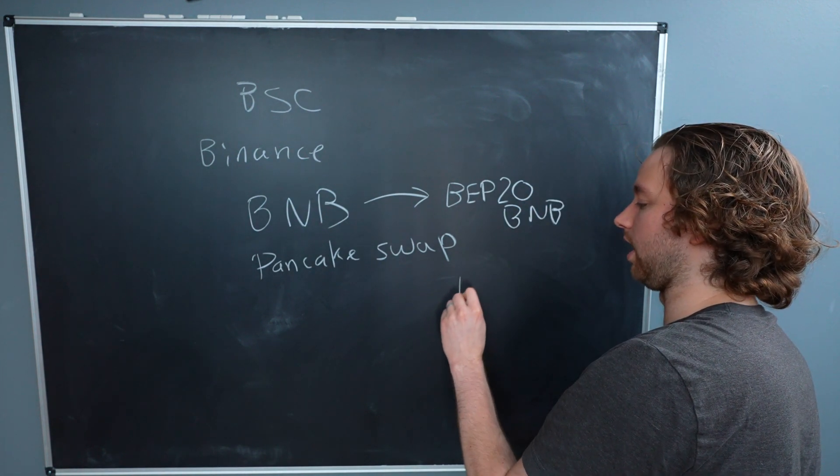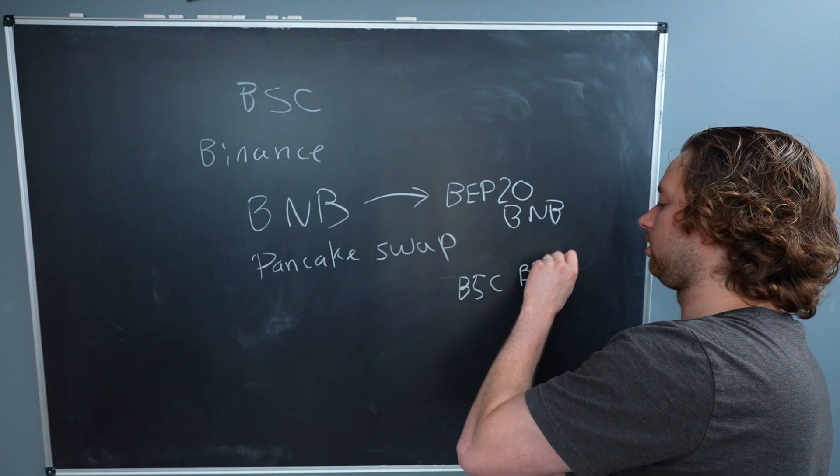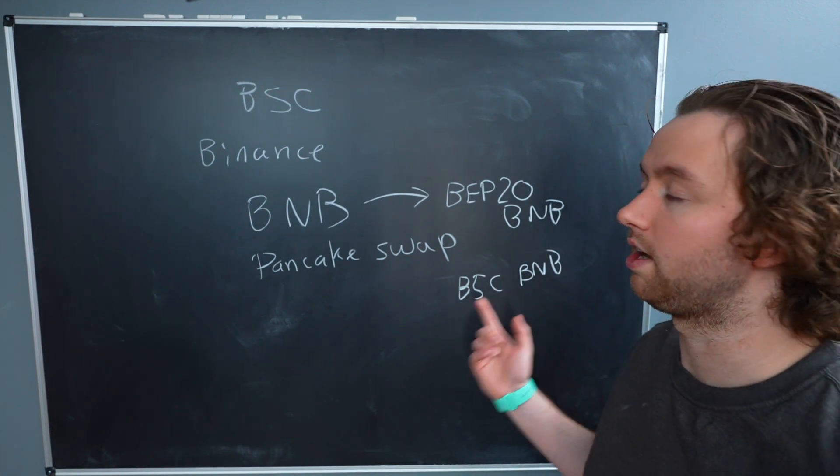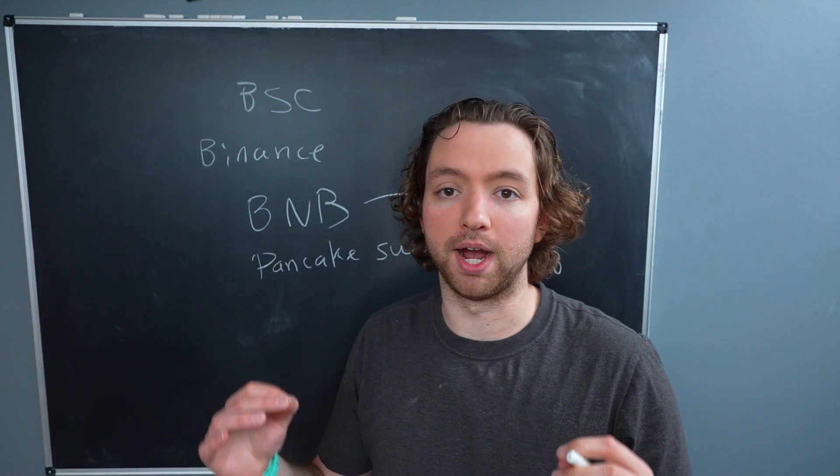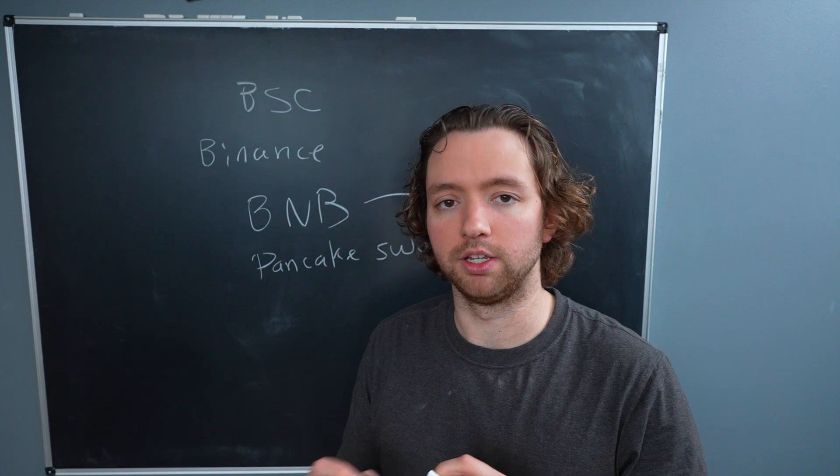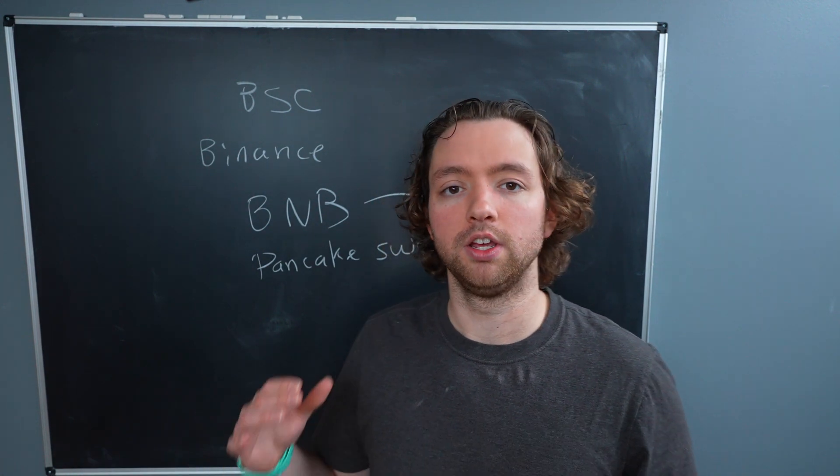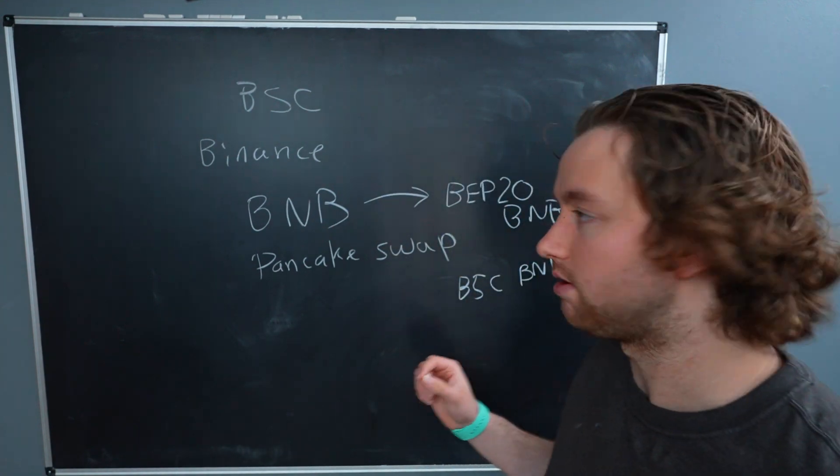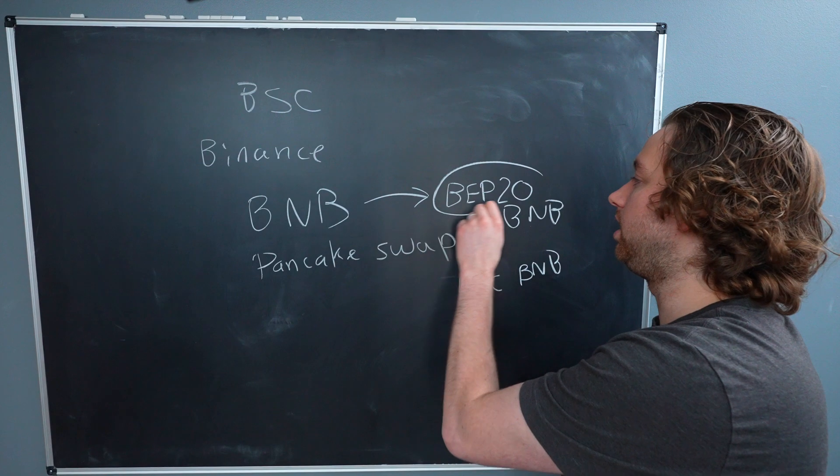Or what you might just hear as BSC BNB. Basically BNB on the Binance Smart Chain. So if you're using Binance.com, if you're not from America and you're on the Binance exchange, you might be given the option to withdraw your BNB as BEP20.